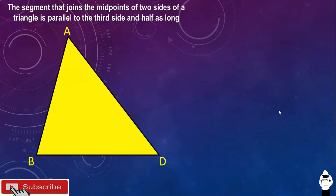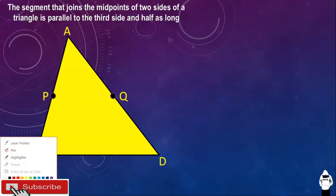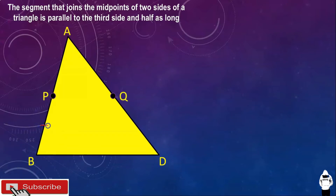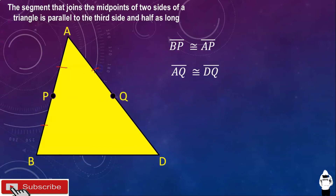Let us consider triangle ABD. We have point P and point Q. Point P is the midpoint of side AB, and point Q is the midpoint of side AD. Since P is the midpoint of AB, segment BP is congruent to segment AP. And since Q is the midpoint of AD, AQ is congruent to DQ. If we draw a line from point P to point Q, we call this the midline of the triangle.